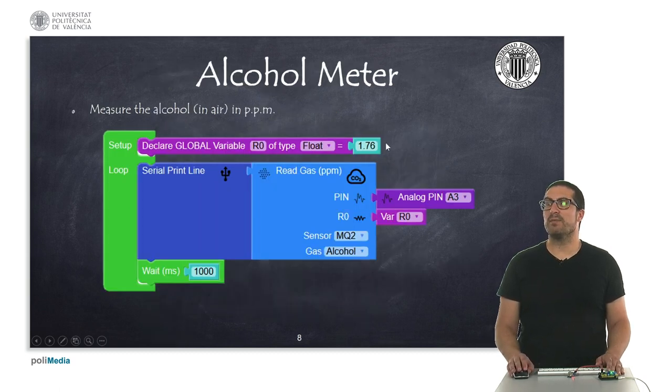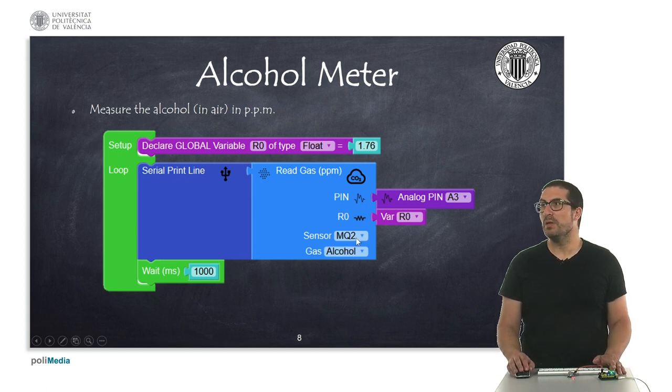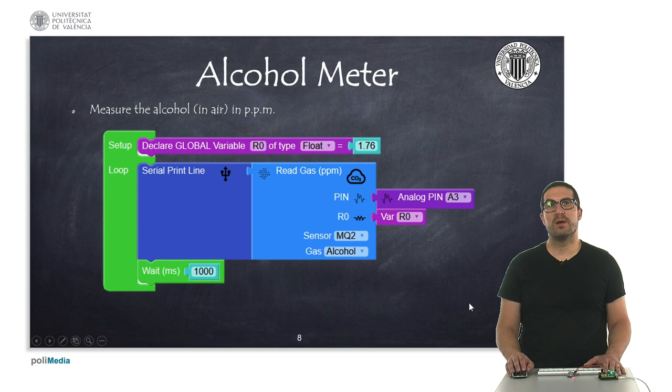Now that I know that for this sensor, or my specific sensor, I have this value here, then what I can do is to read the concentration and then select the sensor, and with this sensor, we can measure with the same resistor here, we can measure different type of gases. In this example, we are measuring the alcohol concentration.